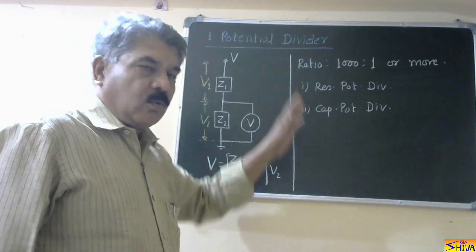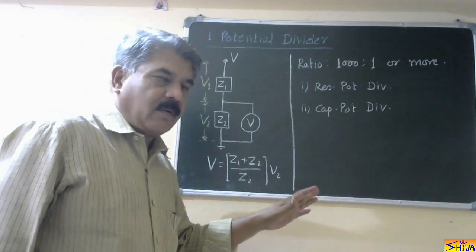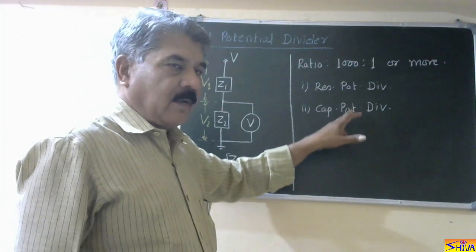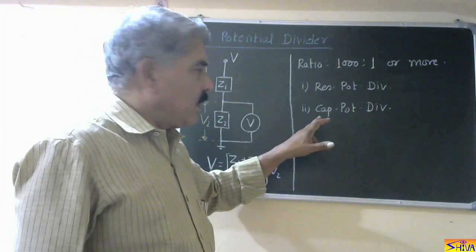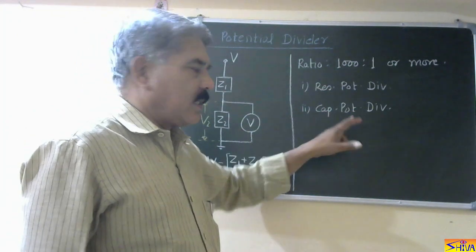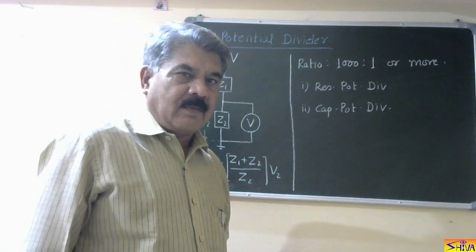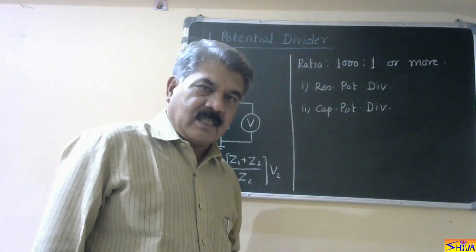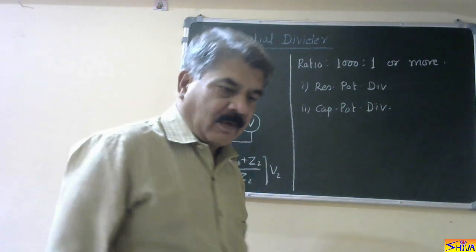Now there are two types of potential dividers. One is the resistive potential divider, or resistance potential divider. The second is the capacitance potential divider. First, we will discuss the resistance potential divider.